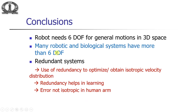In conclusion, a robot needs six degrees of freedom for general motion in 3D space. Many robotic and biological systems have more — the human arm has seven degrees of freedom, making it a redundant system. In mechanical systems, redundancy can optimize joint variables or make velocity distribution isotropic. In the human arm, redundancy is not making the distribution isotropic, but it clearly helps in learning: subjects who use redundancy more learn faster to adapt to external forces, while the error decreases with learning.